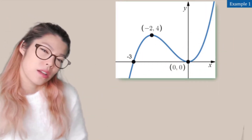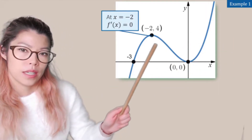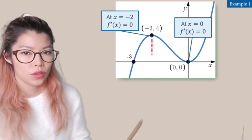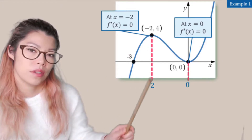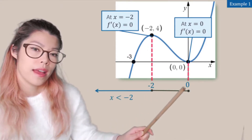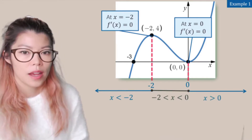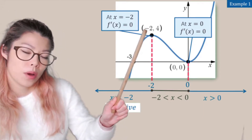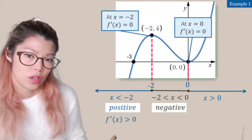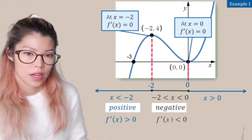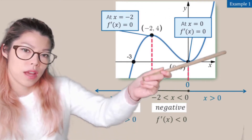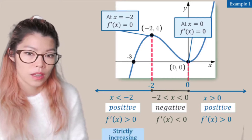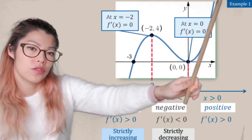Let's have a look at an example — here we have a cubic. At this point, x is negative 2 and f'(x) is zero. At this point, x is zero and f'(x) is also zero. So we can split this graph into three sections: negative infinity to negative 2, negative 2 to zero, and zero to positive infinity. We can describe each section: here the graph is positive, so this one is strictly increasing. Here the graph is negative, so f'(x) is less than zero — strictly decreasing. And here f'(x) is greater than zero — strictly increasing.